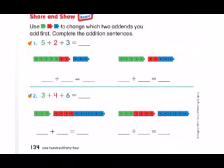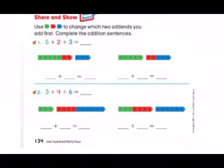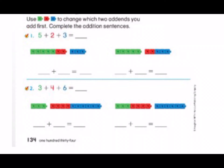Let's look at number one and number two. It says use the three cubes to change which two addends you add first. Complete the addition sentences. Five plus two plus three. In our first problem we can see they added five plus two, which would give us seven. And the three was left out alone. Starting at seven, let's count on: seven, eight, nine, ten. Seven plus three equals ten, so our sum over here should also be ten.